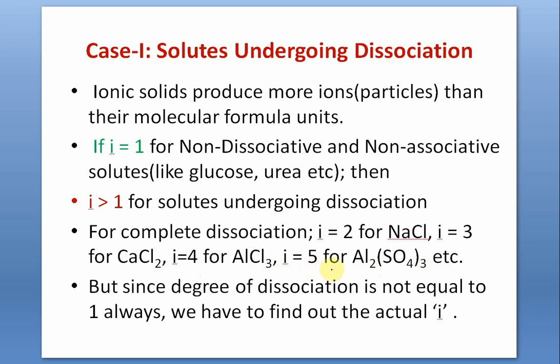Since the degree of dissociation is not always 100%, some molecules will remain undissociated — existing as compact empirical formula units of NaCl. Each undissociated NaCl counts as one particle, each Na⁺ as one particle, each Cl⁻ as one particle. Since degree of dissociation is not always 1, we must find the real value of i taking into account that the degree of dissociation α is not equal to 1.